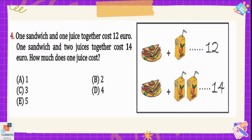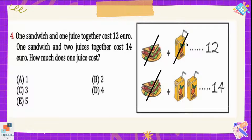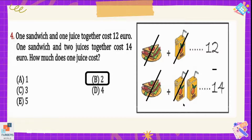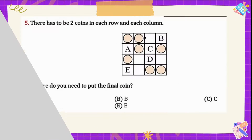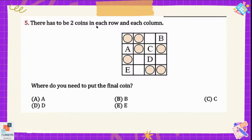Question number four: one sandwich and one juice together cost 12 euros; one sandwich and two juices together cost 14 euros — how much does one juice cost? We will use a simple method: cancel the first sandwich with the second sandwich, and cancel the first juice with the second juice. Then subtract 12 from 14 — the remaining number is 2. So the cost of one juice is 2 euros, which is option B.